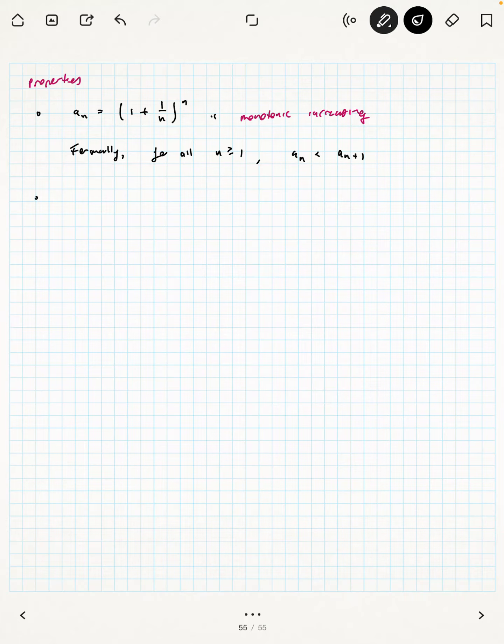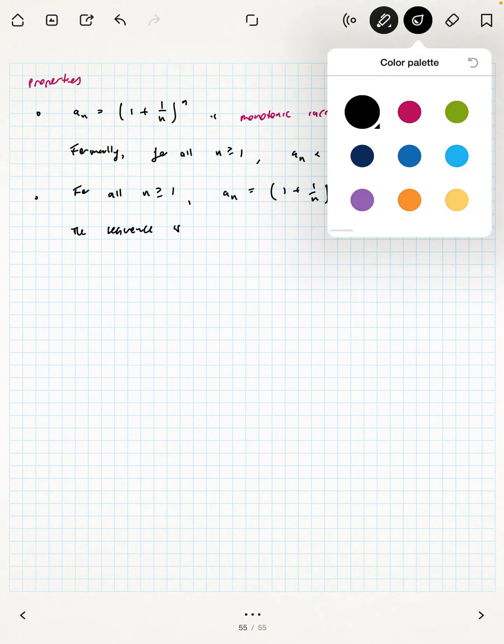Another property of this sequence is that for all n greater than or equal to 1, a_n = (1 + 1/n)^n is less than 3. There is some fixed real number for which this sequence never goes above. There is no n that you could plug in to get a term larger than 3. So this makes the sequence bounded above.